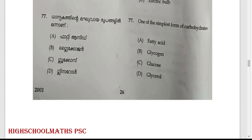One of the simplest forms of carbohydrates is glucose. Option C: glucose.